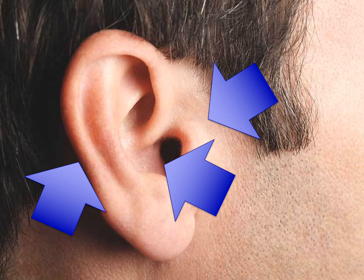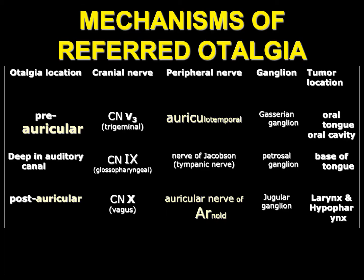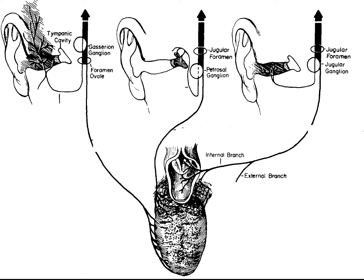It's well organized and easy to remember. Looking at your ear: preauricular is cranial nerve five, deep auricular is nine, post auricular is ten — five, nine, ten. The tumor locations follow in order as well: oral cavity, then oropharynx, then hypopharynx and larynx. If you put this in a table, you can stress the key letters in each column — preauricular, auriculotemporal; deep auricular canal; post auricular, auricular nerve of Arnold — for simplicity.